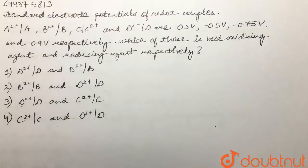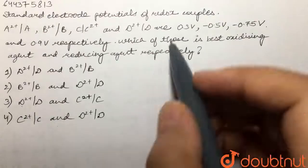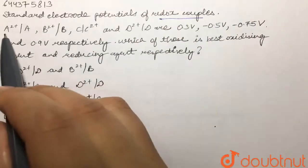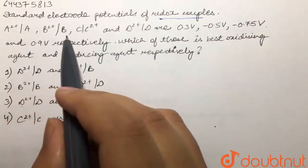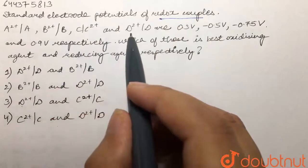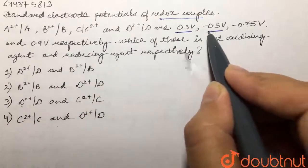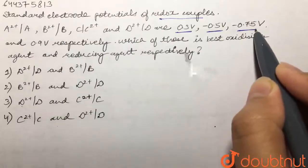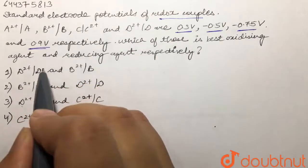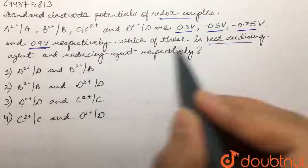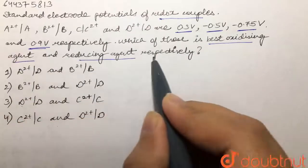Our question is, standard electrode potentials of redox couples A²⁺/A, B²⁺/B, C/C²⁺ and D²⁺/D are 0.3V, -0.5V, -0.75V and 0.9V respectively. Which of these is the best oxidizing agent and reducing agent respectively?